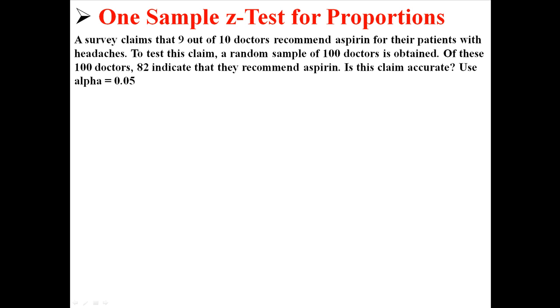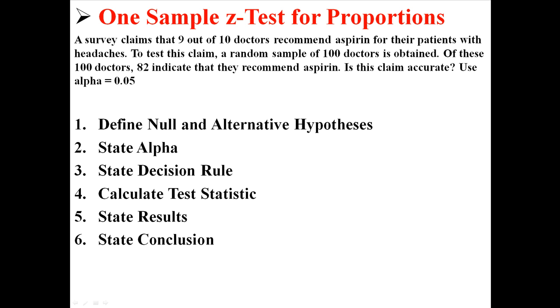For this question, we have six parts. Part one is to define the null and the alternative hypotheses. Then we state the alpha. Then we state the decision rule. Then we calculate the test statistic, and then we state our results, and we state our conclusion.